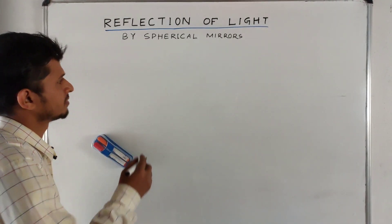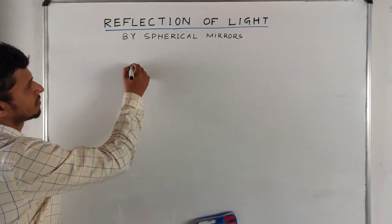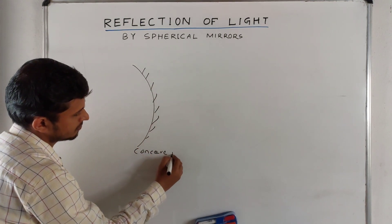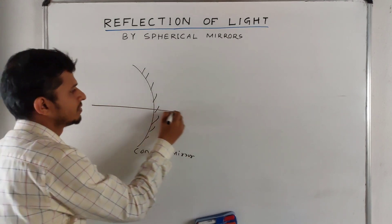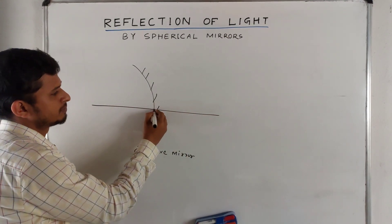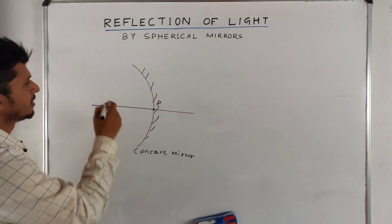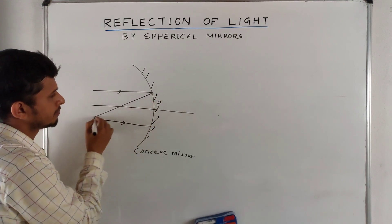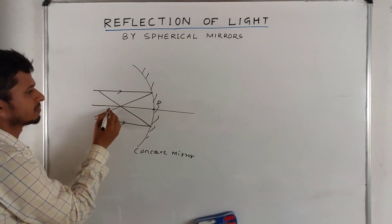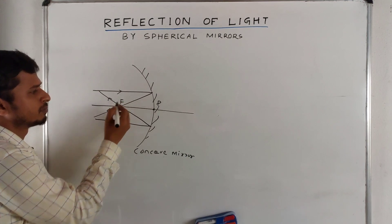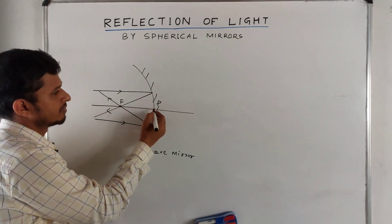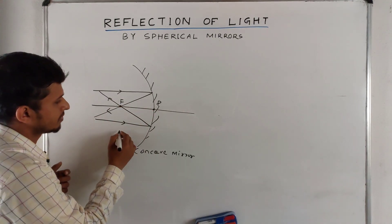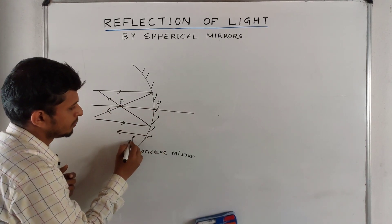Reflection of light by spherical mirrors. First part: concave mirror. This is the principal axis and this point is the pole. Let a parallel ray of light strike on the surface and reflect back in this direction. This point is called the focus or focal point. The distance between the focus F and pole P is called the focal length.